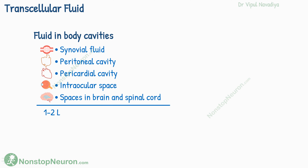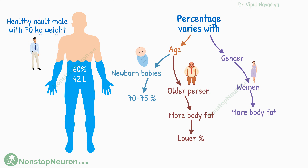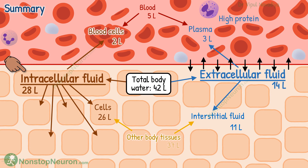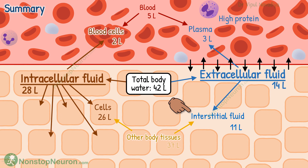Now for a quick summary: a normal healthy male of 70 kg has 60%, or 42 liters, of water in his body. This percentage varies depending on age, gender, and other factors. Intracellular fluid volume is about 28 liters, including the volume of blood cells. Extracellular fluid volume is about 14 liters, comprising 11 liters of interstitial fluid and 3 liters of plasma.